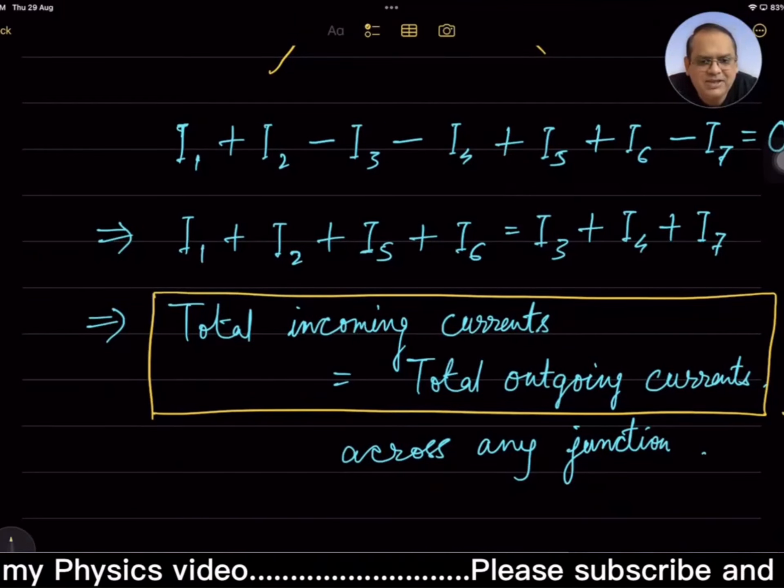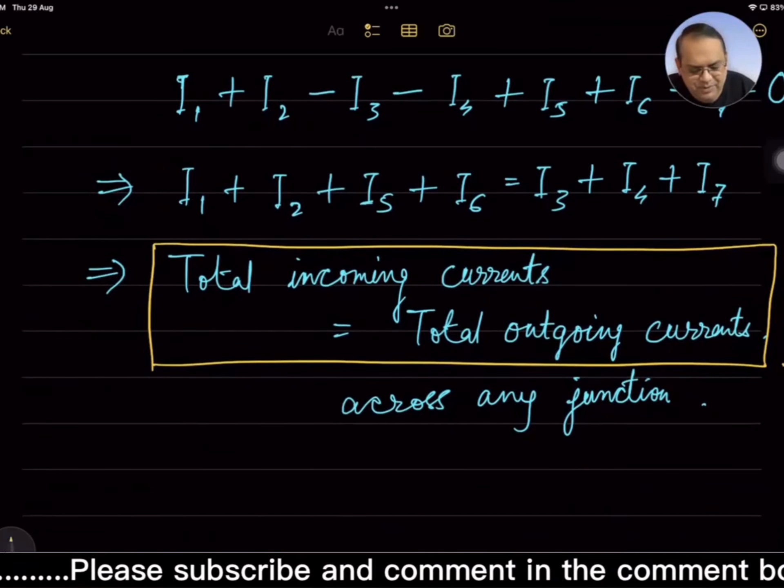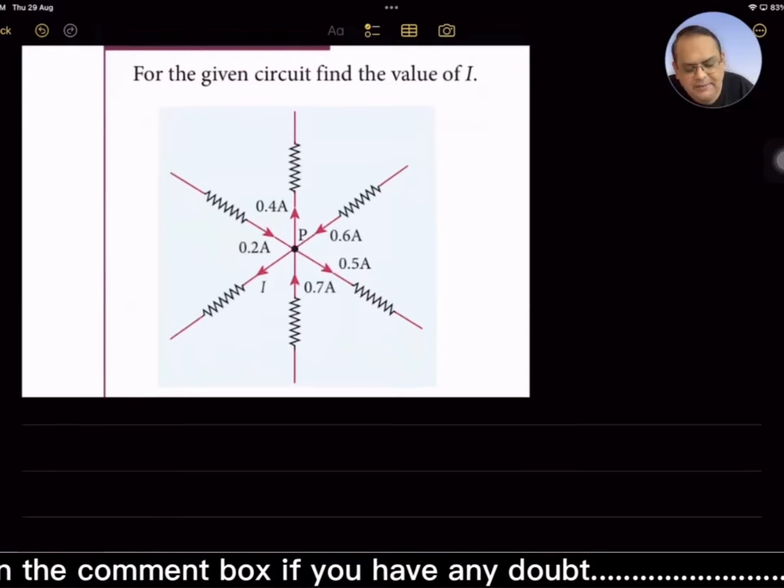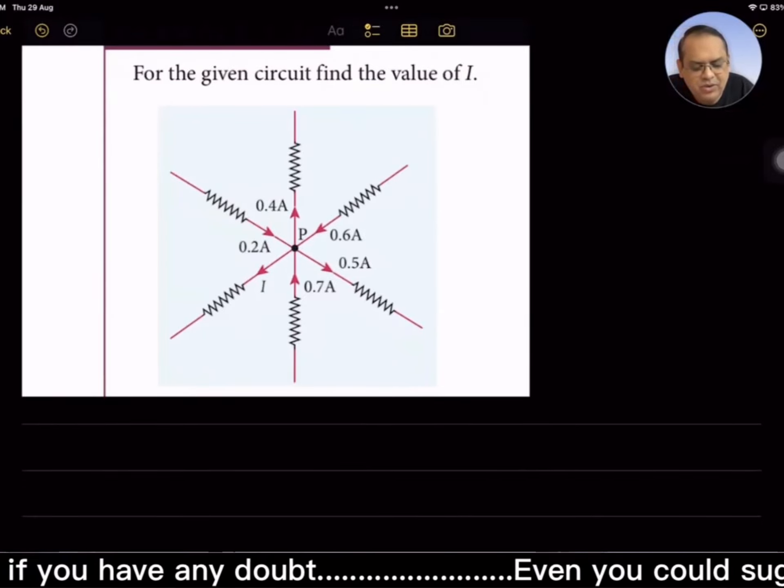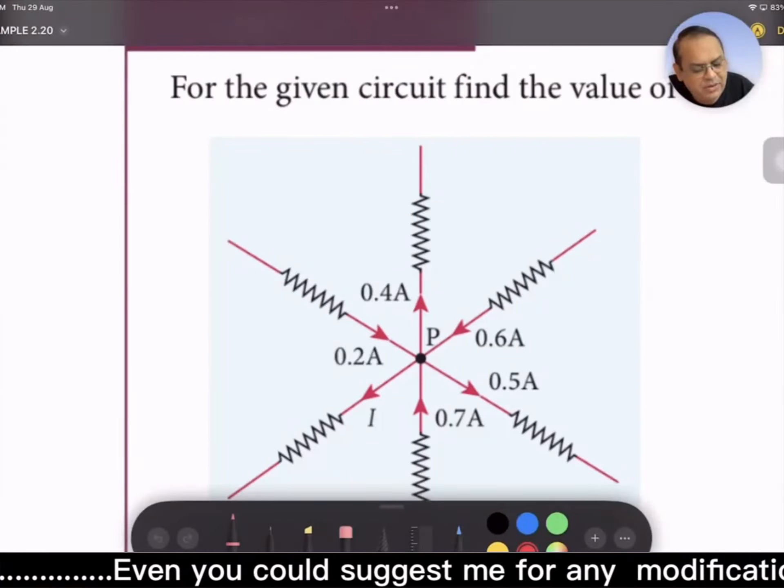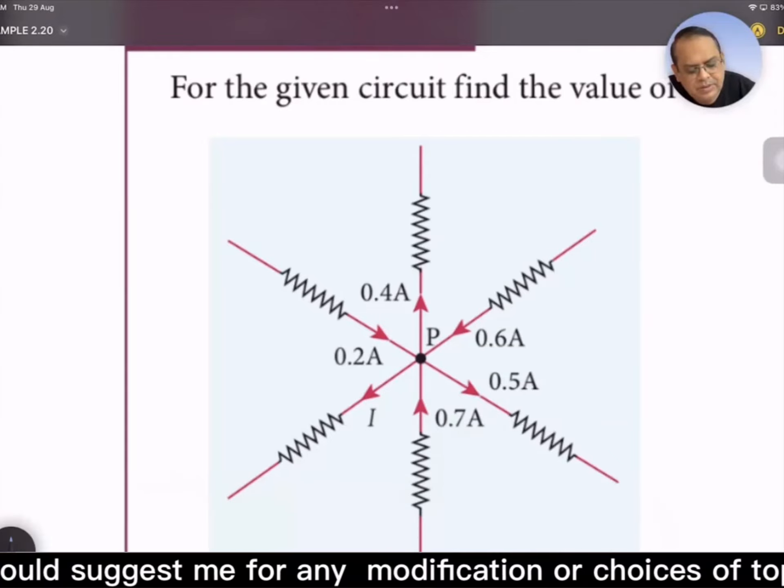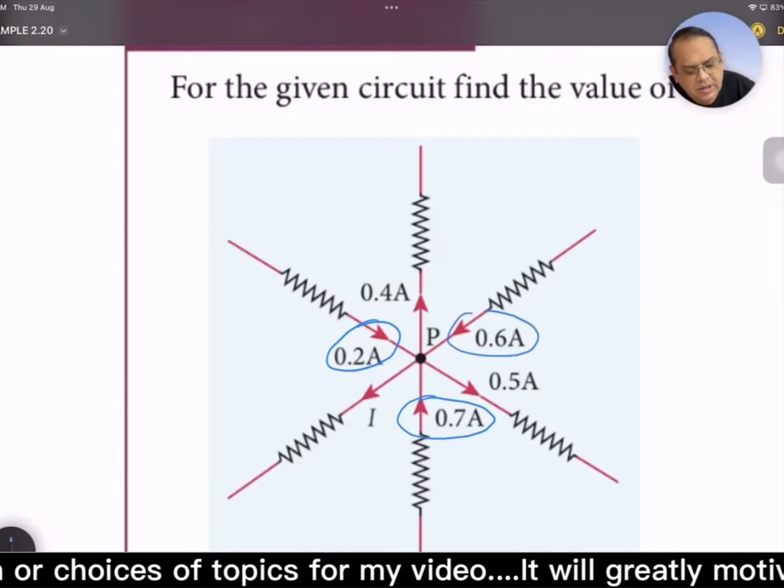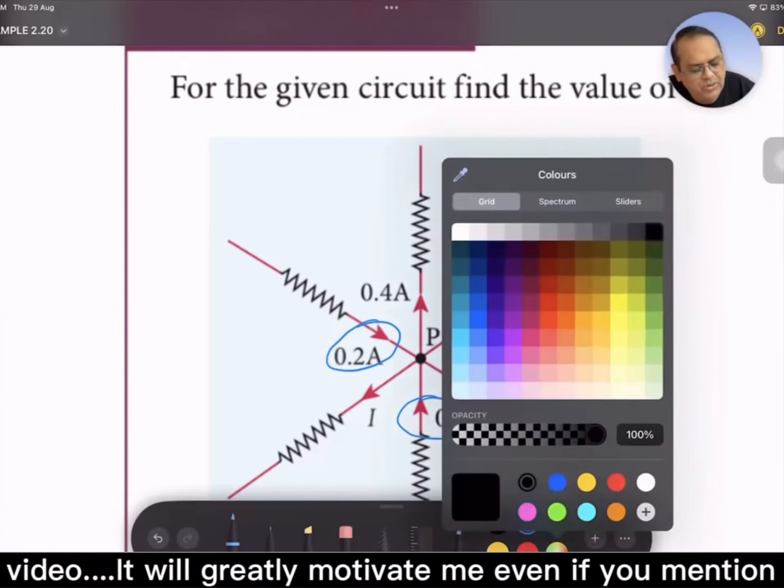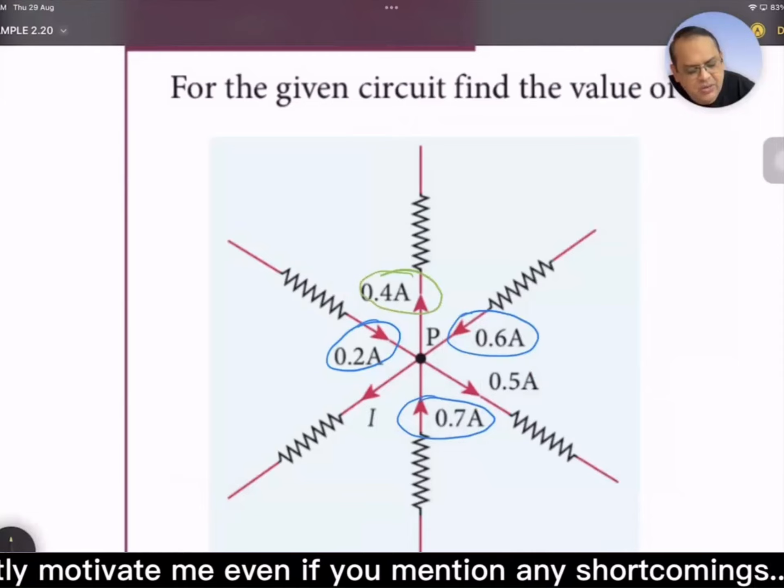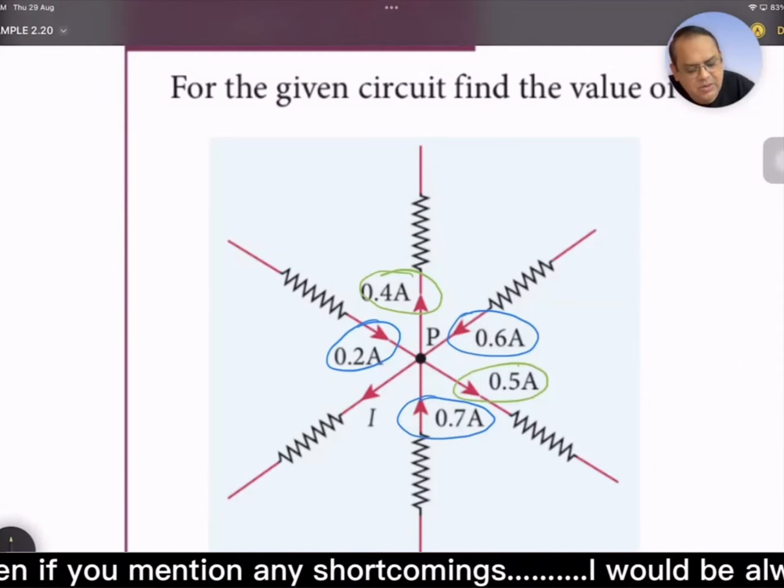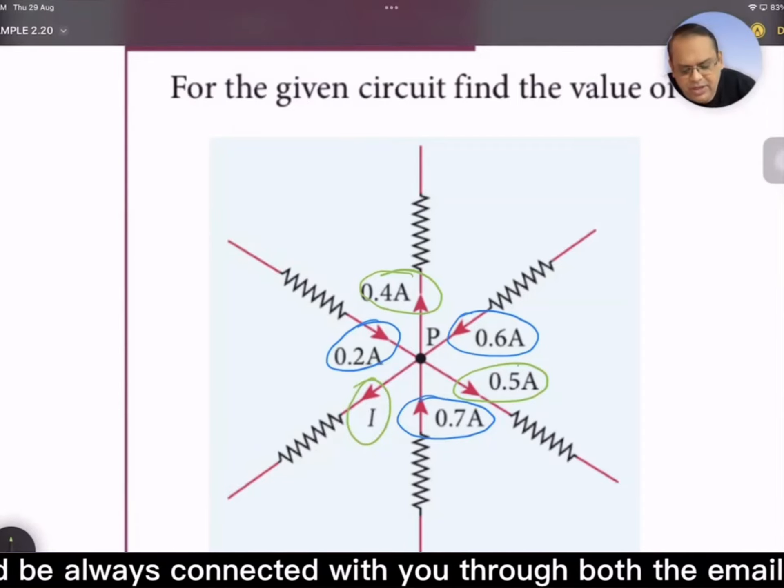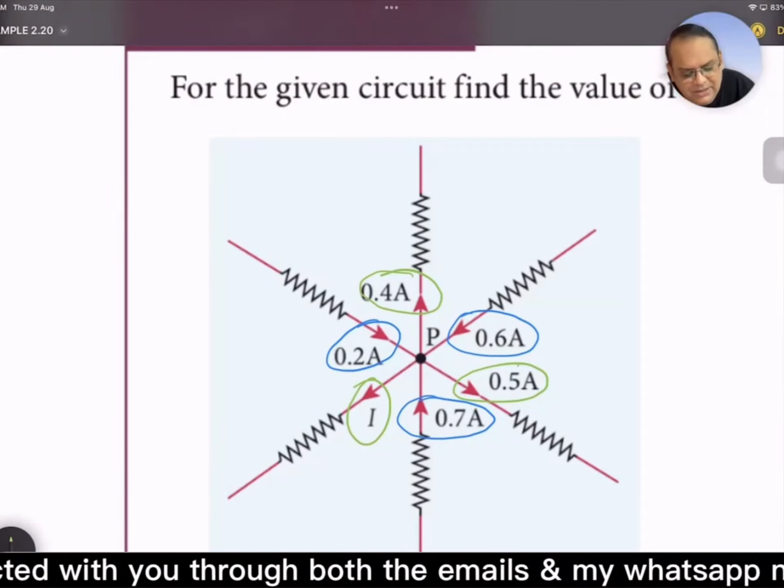If we see an illustration for the given circuit, find the value of I. Let's identify which all are incoming and which are outgoing. These are incoming, and these are outgoing. So if we try to solve at this interface, incoming equals outgoing.